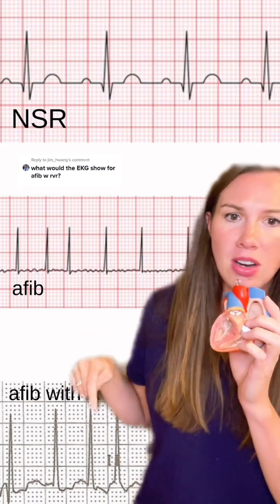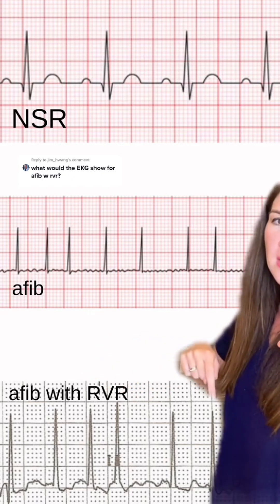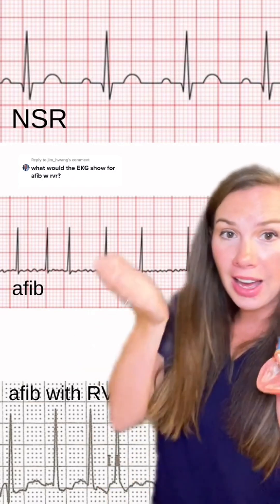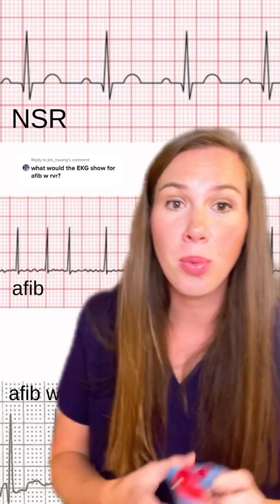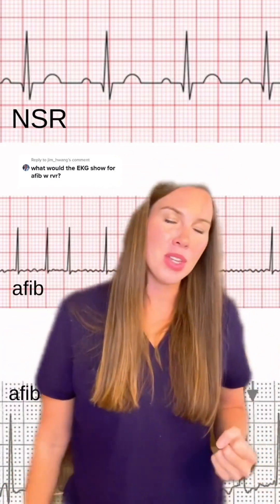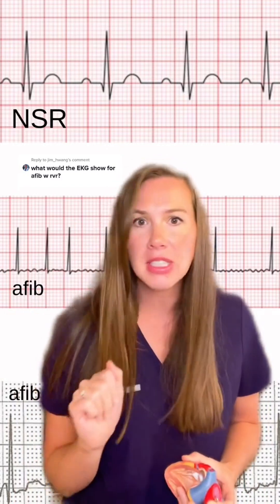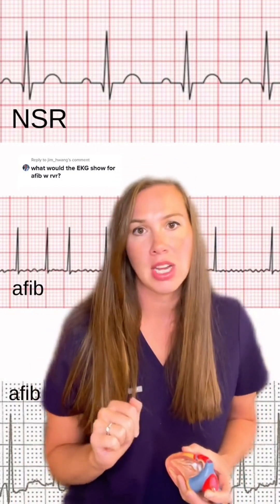With AFib with RVR, the difference really is in the heart rate. It's a higher heart rate, and you're in the hospital in an emergency or urgency situation. Your heart rate is 160, 170 — technically anything over 100 — but really when we're seeing someone flip into AFib with RVR, you're seeing a pretty high heart rate: 150, 160, 170 kind of situation.